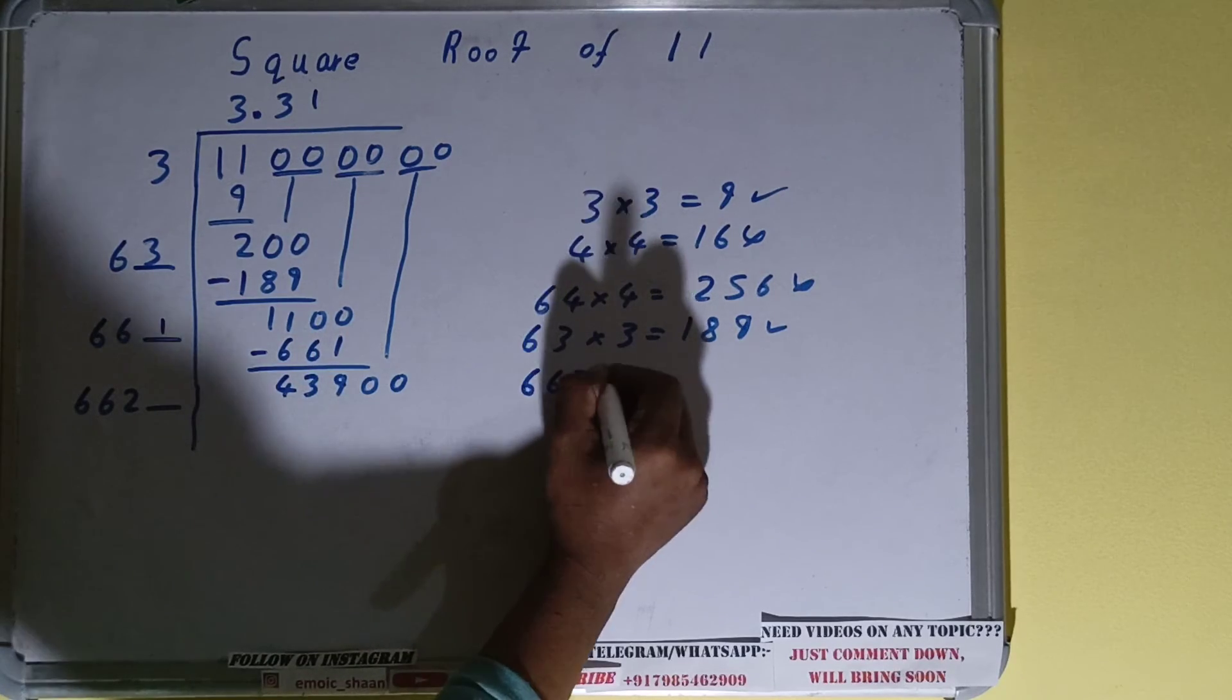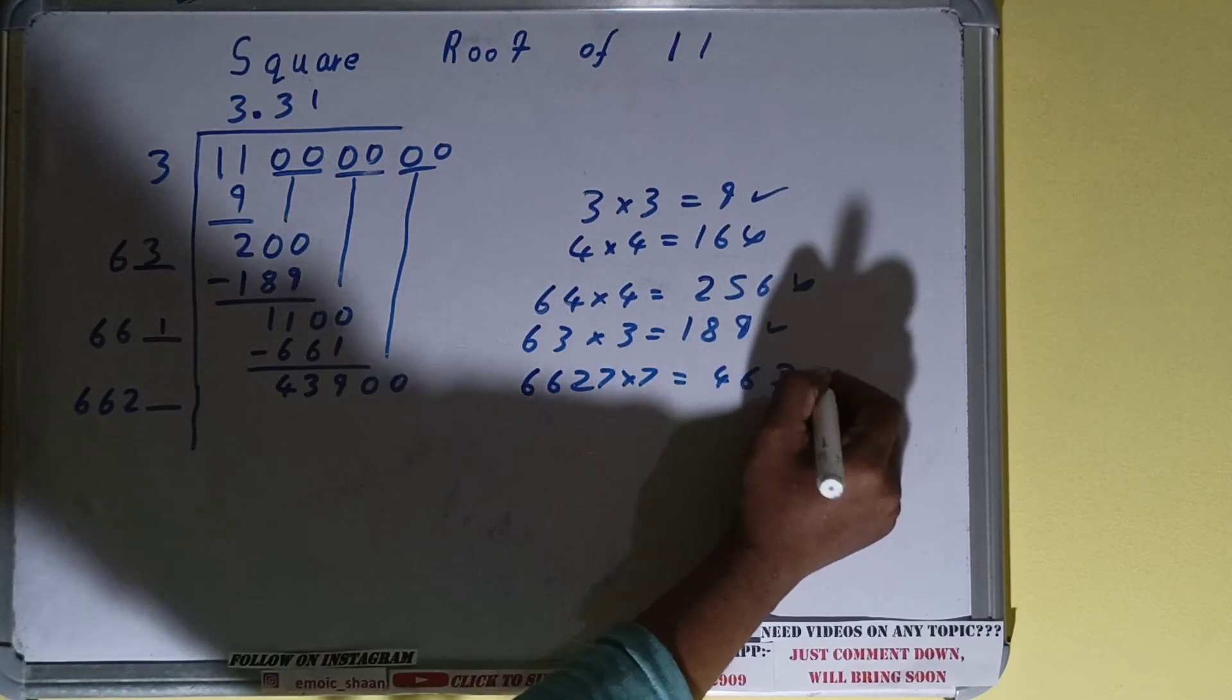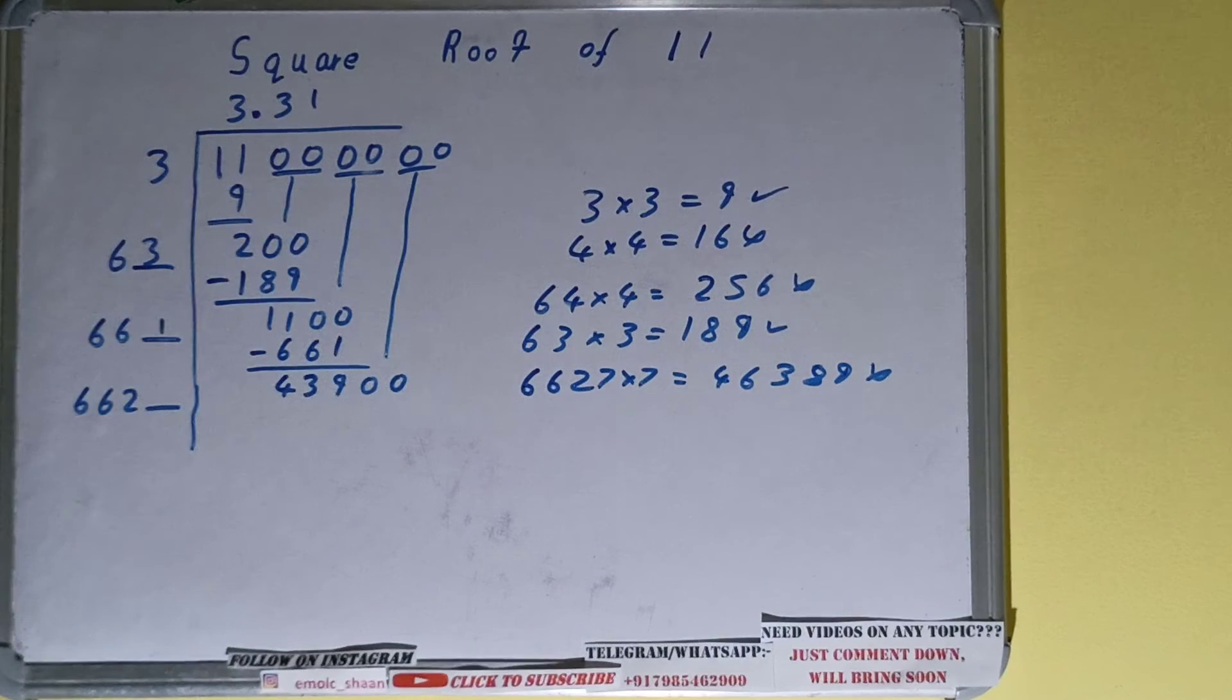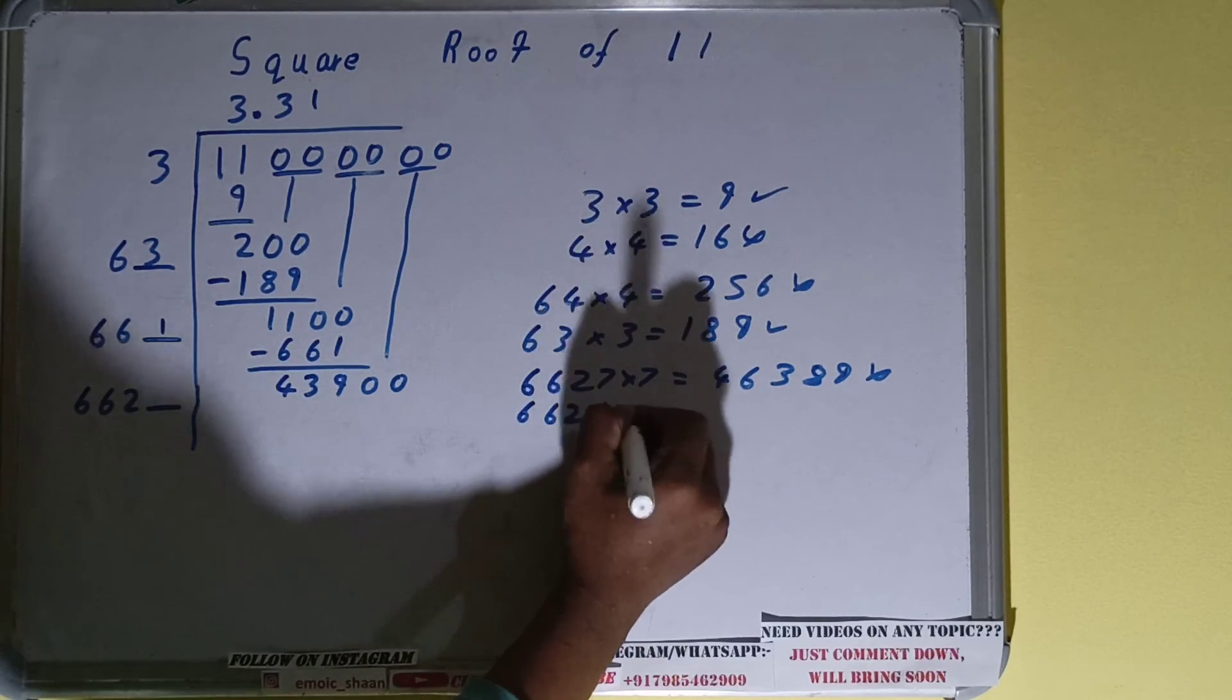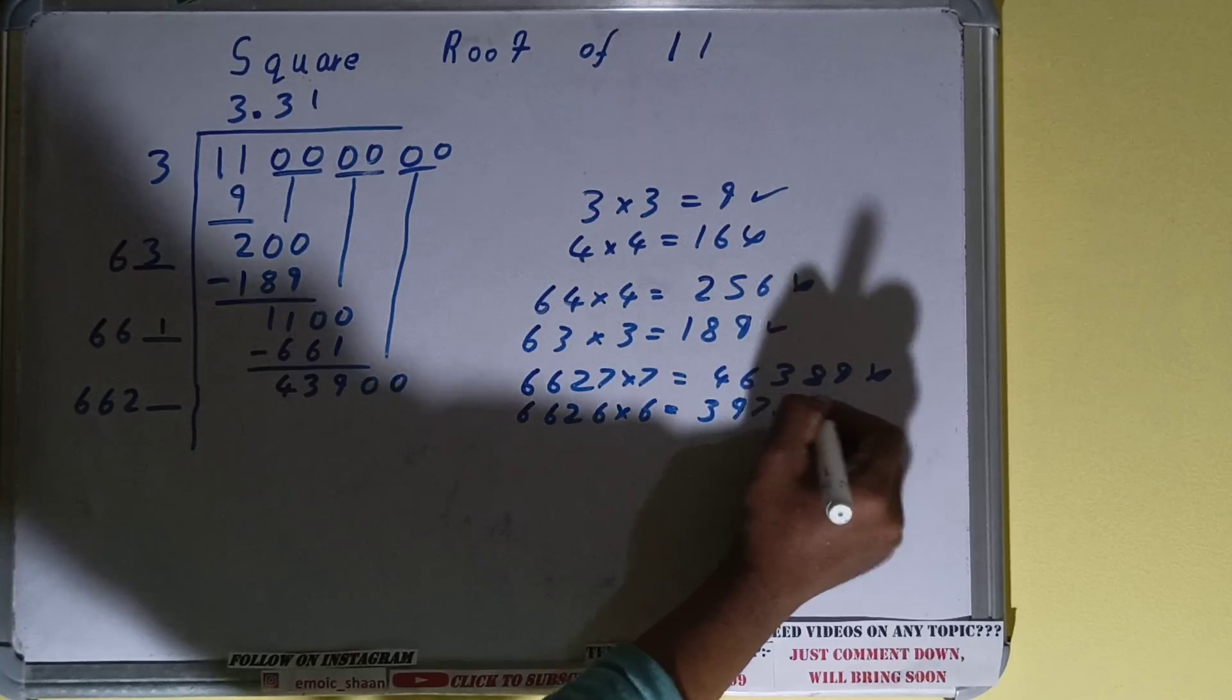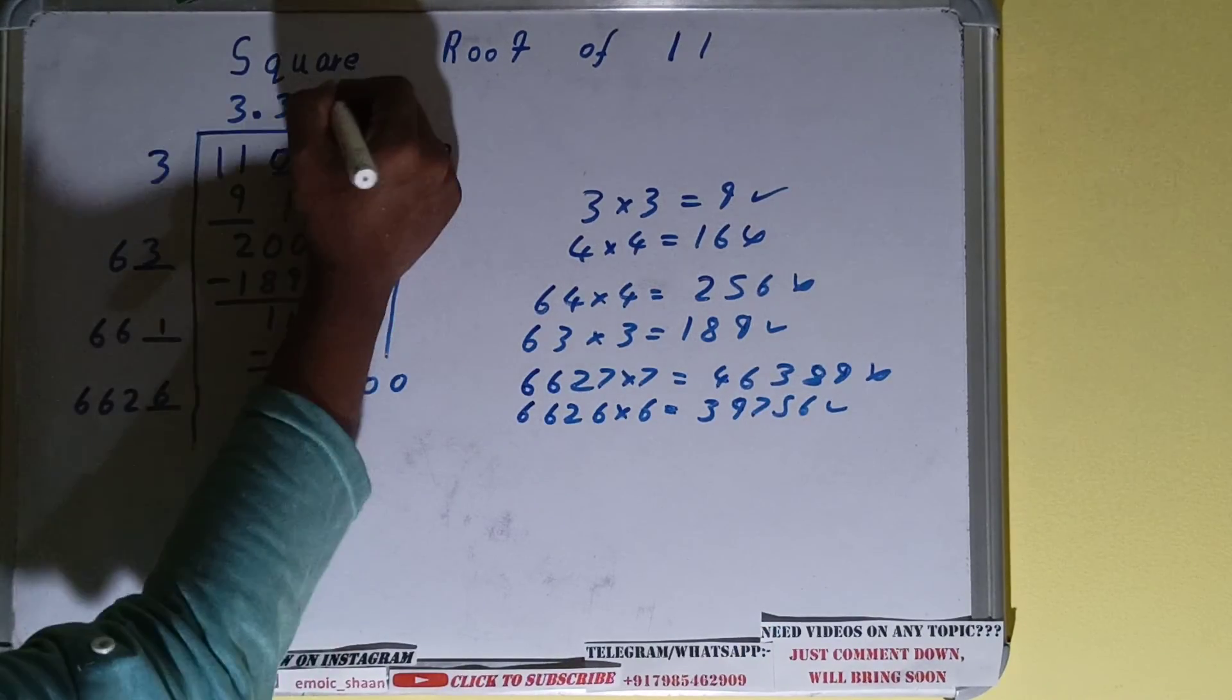6627 into 7 we will have 46389. We cannot take that. If we consider 6, we'll have 39756. Yes, we can take this. So let's take 6 and let's take 6 here.